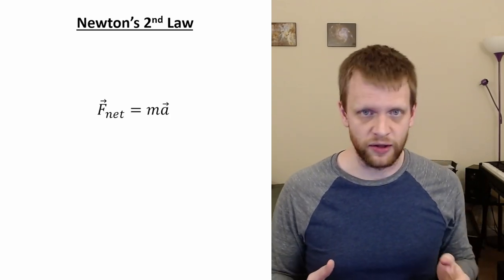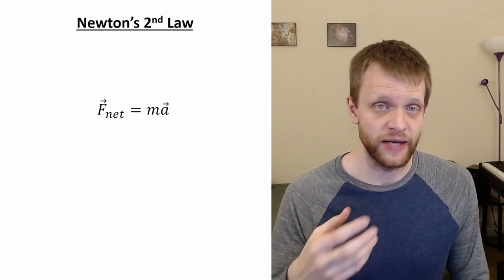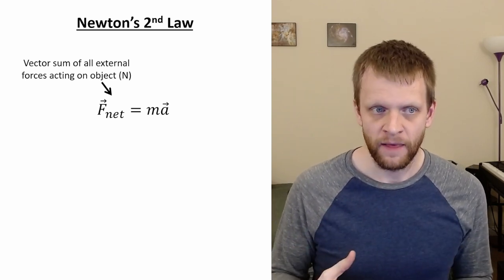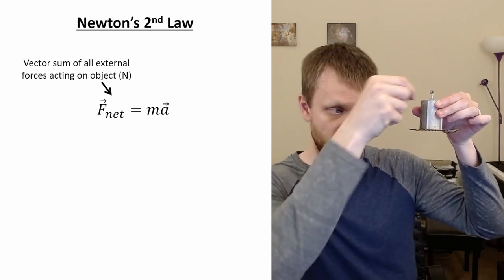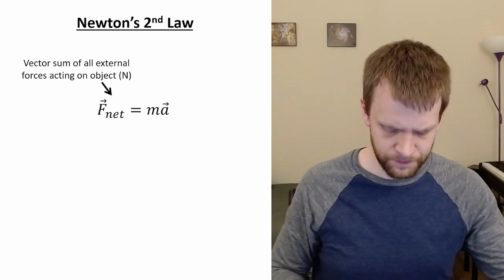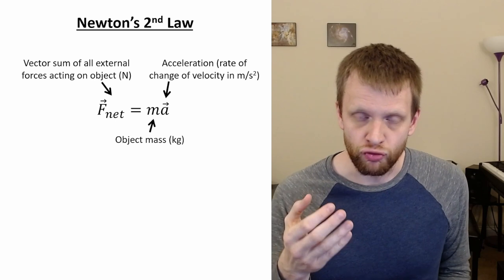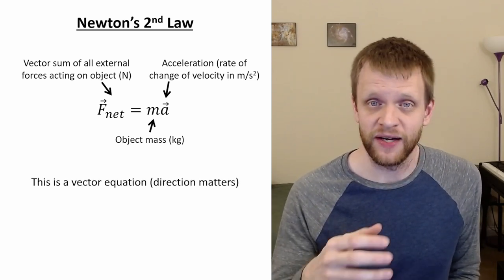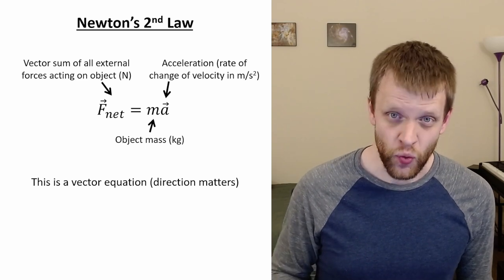Let's talk a little bit about Newton's second law. The modern form introduced in intro physics classes is that the net force is equal to the mass of the object times the acceleration. The F_net is the vector sum of all external forces acting on the object — in the case of the hanging object, just gravity pulling down and tension pulling upwards. The mass M is in kilograms, and acceleration is the rate of change in velocity in meters per second squared. You have to be very careful because this is a vector equation, and whenever we're talking about vector quantities, direction matters.